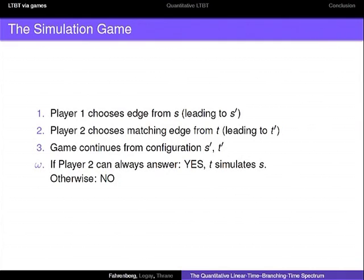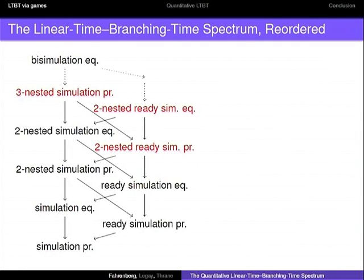Here is the algorithm for the simulation game: player one chooses an edge from the state, then player two chooses a matching edge, and the game continues from this new configuration. If player two can always answer the move of player one, then there is a simulation relation. If player two at some point cannot answer, then there is no simulation relation. Interestingly, this game can be modified in different ways to explain all those relations in the spectrum. The spectrum is slightly reordered here, and there are some new relations in it too.